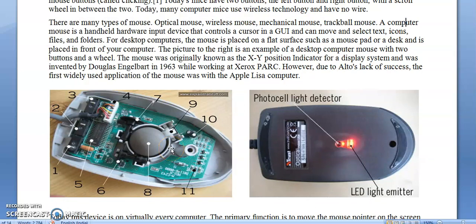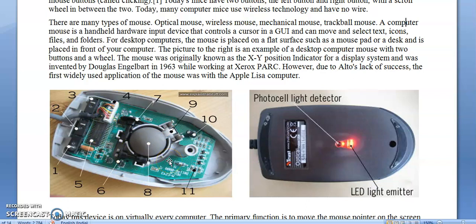Here we can see the internal parts of a mouse. This is a mechanical mouse — we can see a ball in between and the various circuitry of that mouse if you open it. The movement of this ball is tracked by the pointer on the screen; as the ball moves, the pointer moves on the screen as well.